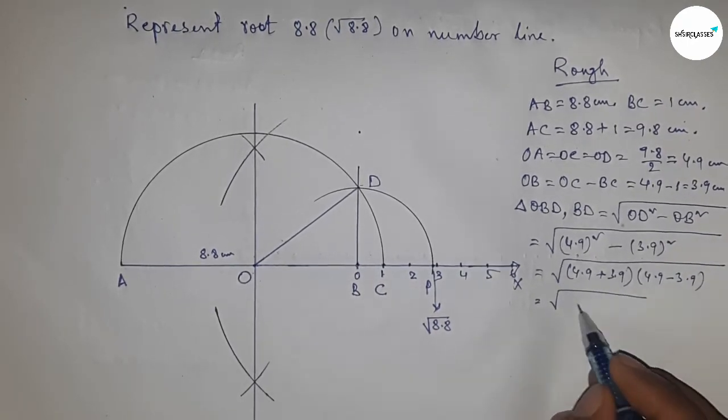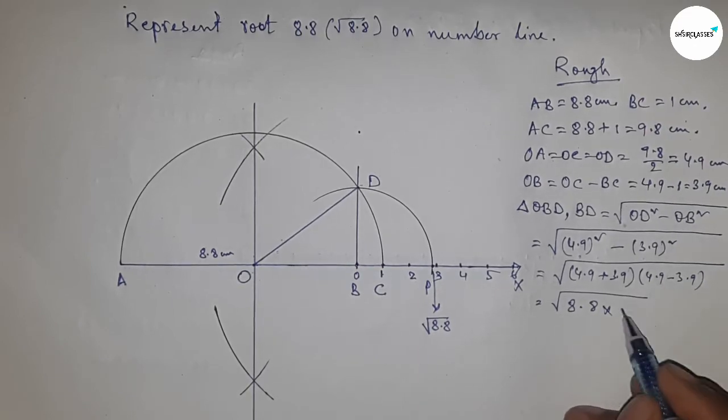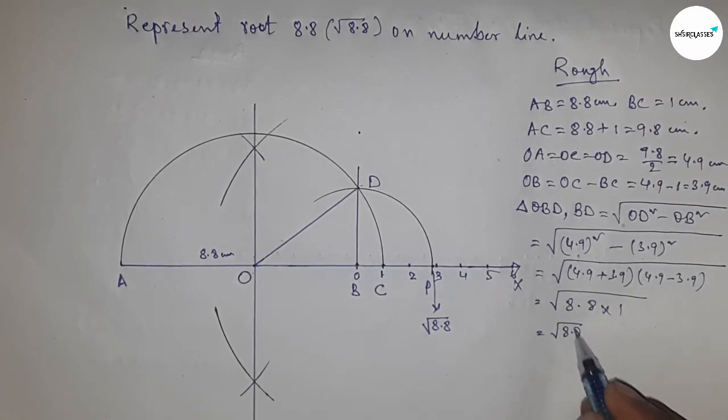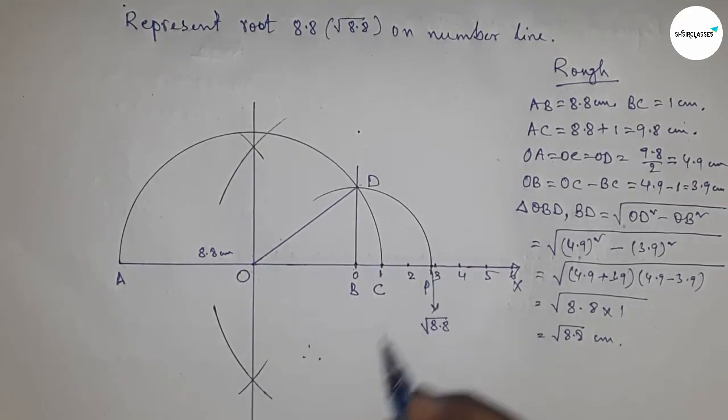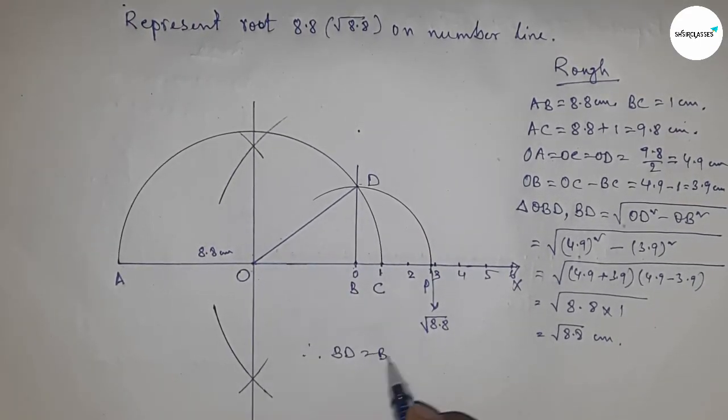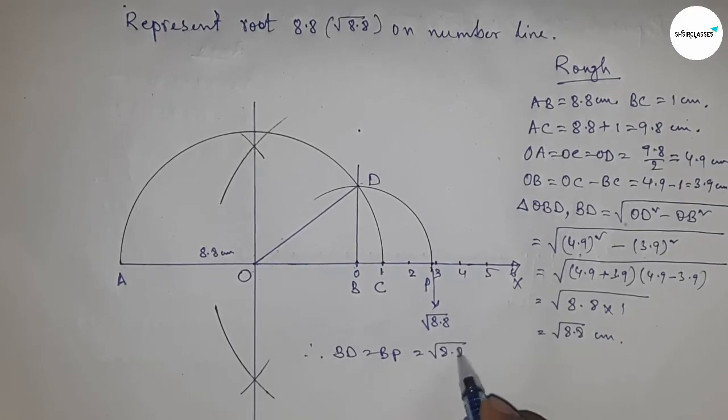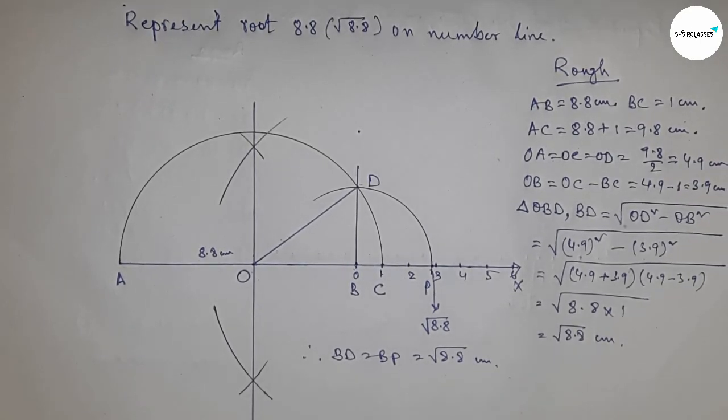From this, we get 8.8. So this is root 8.8 cm. Therefore, distance BD and BP are equal to root 8.8 cm. That's all, thanks for watching. Please subscribe, like, and comment on my video.